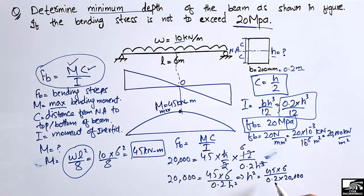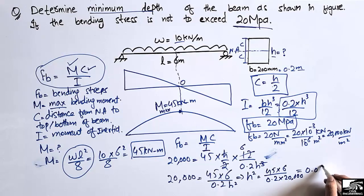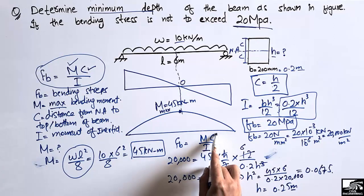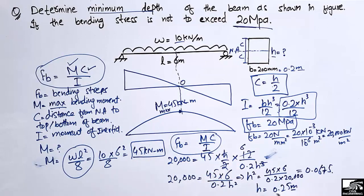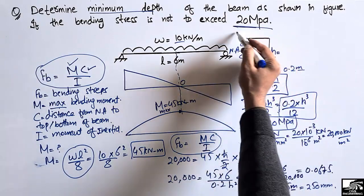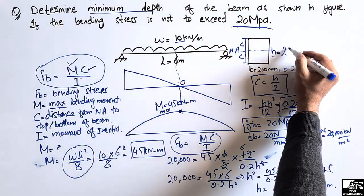Rearranging for H²: H² = 45 × 6 / (0.2 × 20,000) = 270 / 4000 = 0.0675. Taking the square root, H = 0.25 meters. Since all units were in kilonewtons and meters, the result is in meters, which converts to 250 millimeters.